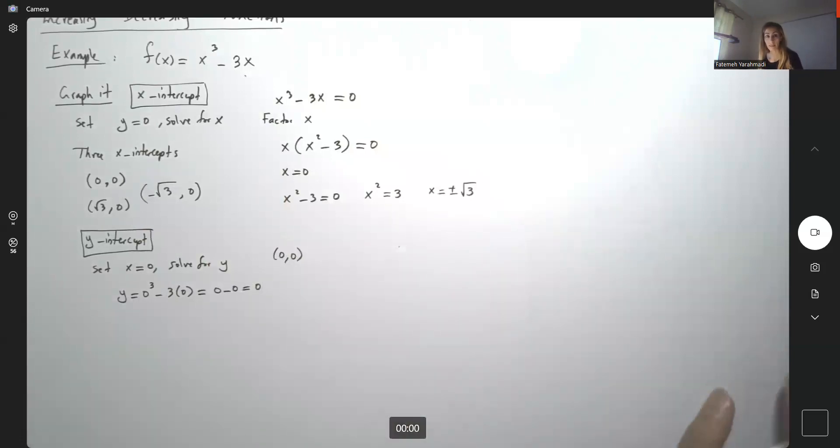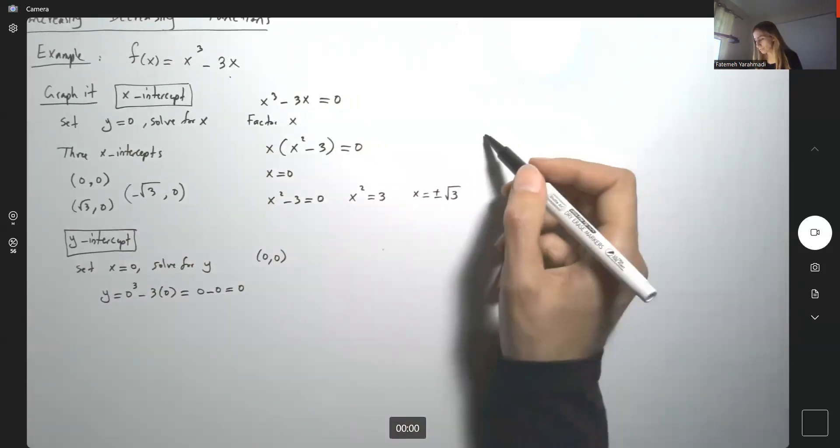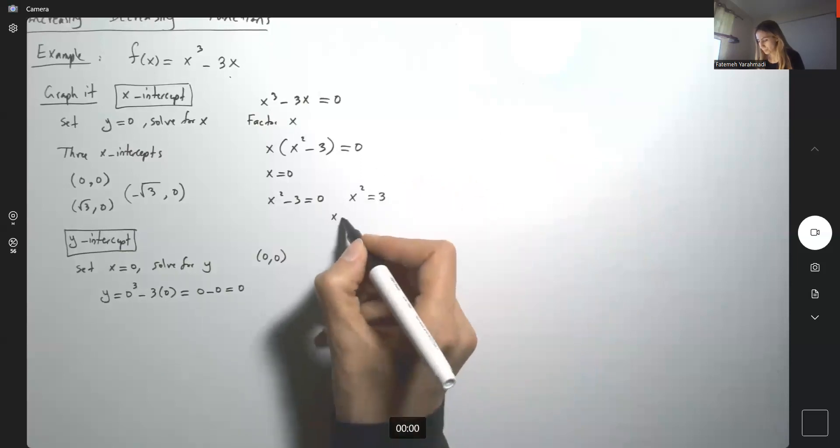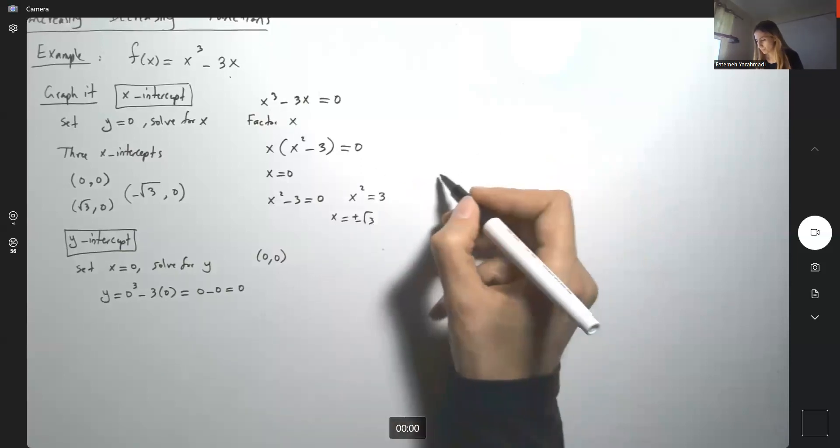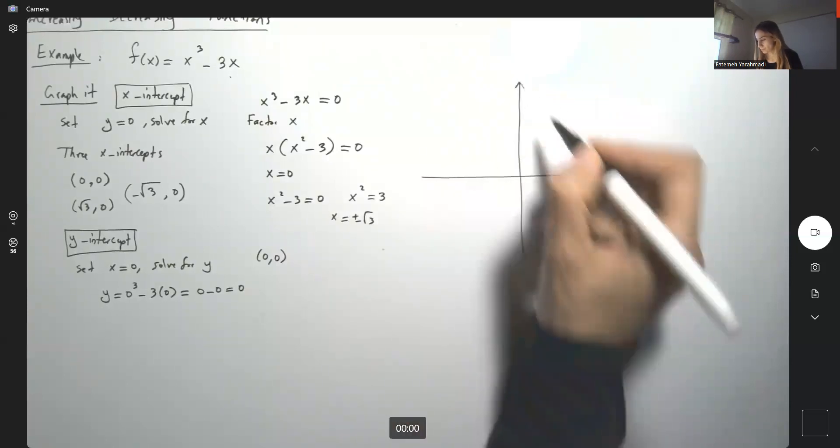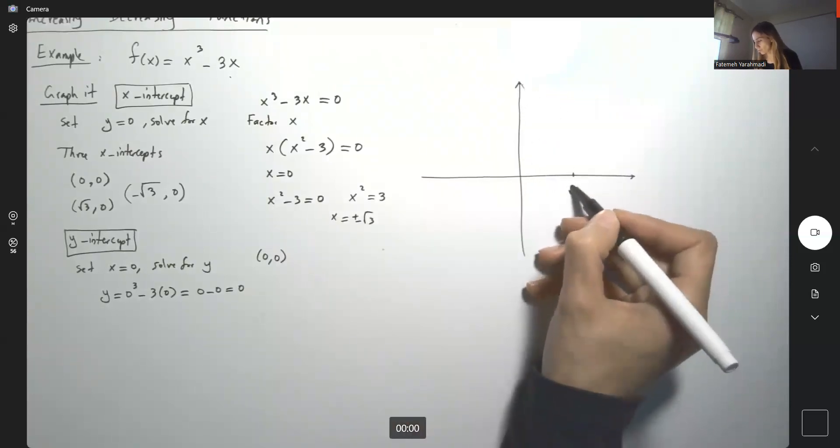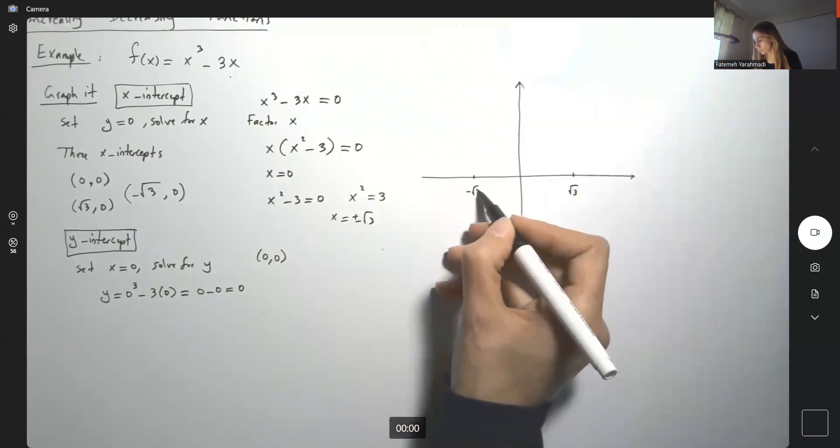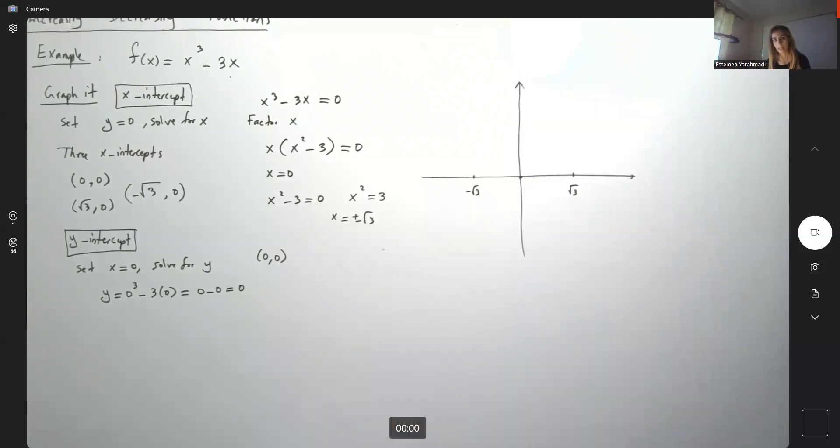Okay, I can graph some part of this function. Here we go. I have √3, -√3, and 0. But what else? Let's plug in more points.